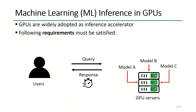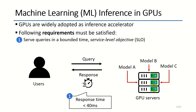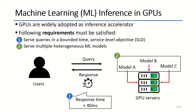Nowadays, GPUs are widely adopted as machine learning inference accelerators. This is because GPUs accelerate highly parallel operations and are generally accessible computing devices. When accelerating machine learning inference tasks on GPU, there are crucial requirements. First, inference queries must be served in a bounded time, often given as a service level objective. Second, to improve the utilization of servers, multiple heterogeneous models must be served together at the same time.